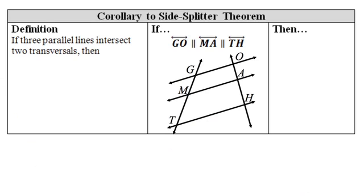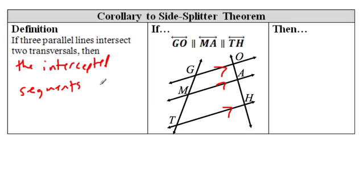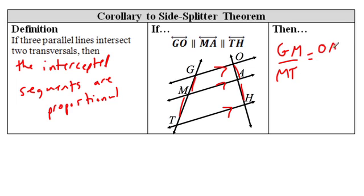Moving on — this is kind of like the perspective drawing. I've got these parallel lines — parallel, parallel, parallel. If three parallel lines intersect two transversals, then the intercepted segments are proportional. Same idea, but it's not in a triangle now. GM to MT is the same thing as OA is to AH. This is to this as that is to that.